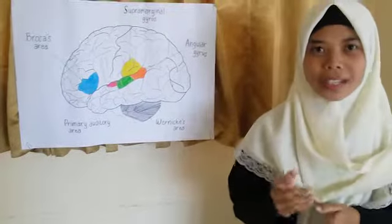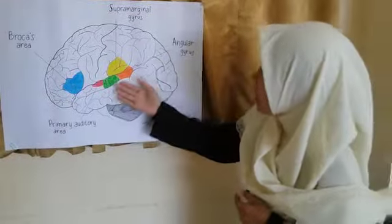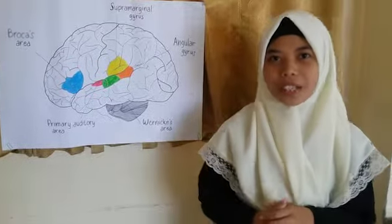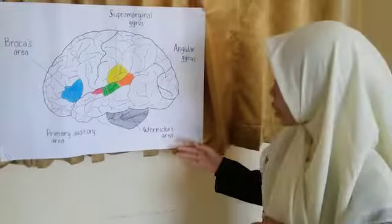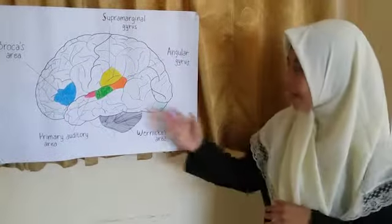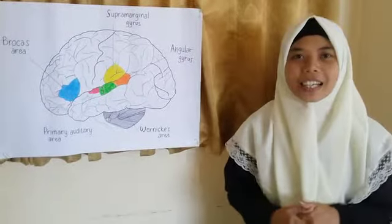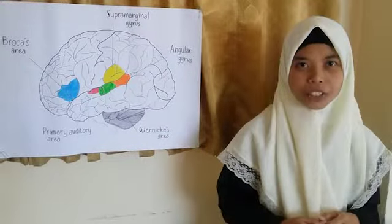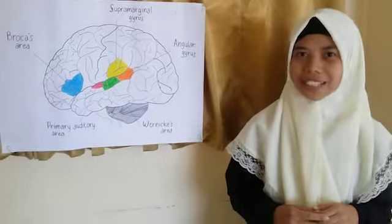The next part is Wernicke's area. As you will see in this picture, the green color is Wernicke's area. Wernicke's area is located near the back of the auditory area. This section of the brain is involved in the comprehension of words and selection of words when producing a sentence.